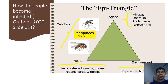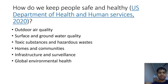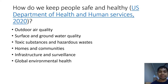The epi-triangle identifies those different aspects: the agent which causes the disease, the host which is the person or group of people being affected, and the environment in which they are affected. The ways to improve people's health is by improving the environment in which they live, work, and play, and by providing them with adequate resources to improve their health.